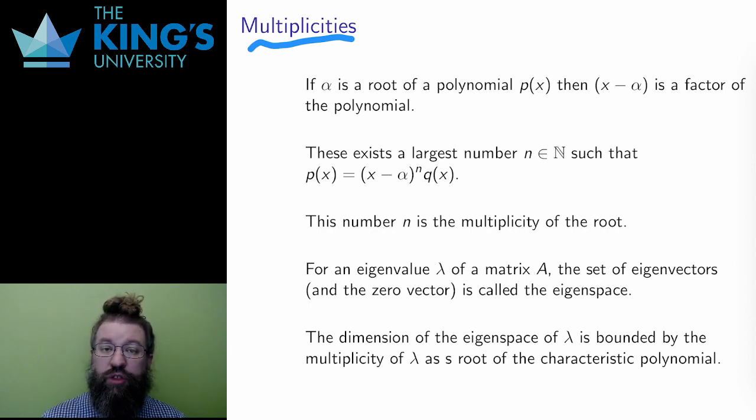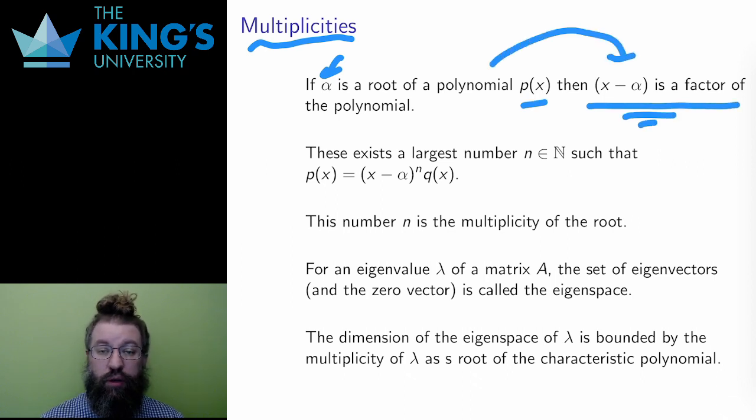If a number alpha is the root of a polynomial, this is equivalent to x minus alpha being a factor of the polynomial. Since it is a factor, I can write the polynomial as p of x equals x minus alpha times q of x for some other polynomial q. It's a factor, so I can factor it out. However, it might still be a factor of q of x. It's possible maybe I could factor it out again. But there is a maximum to this.